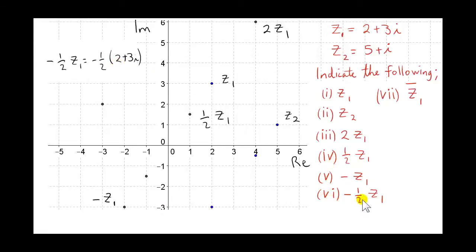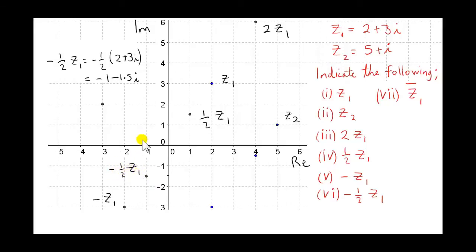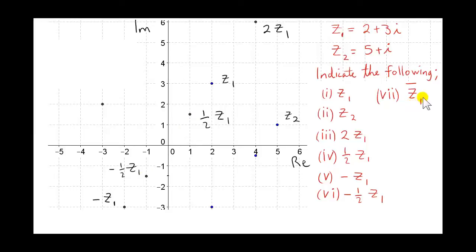In part 6 we want minus a half z1. Minus a half times 2 gives minus 1, and minus a half times 3 gives minus 1.5. So this point has real part minus 1 and imaginary part minus 1.5. Multiplying by a negative scalar maps the point through the origin — it's the same as taking plus a half z1 and then reflecting it through the origin.